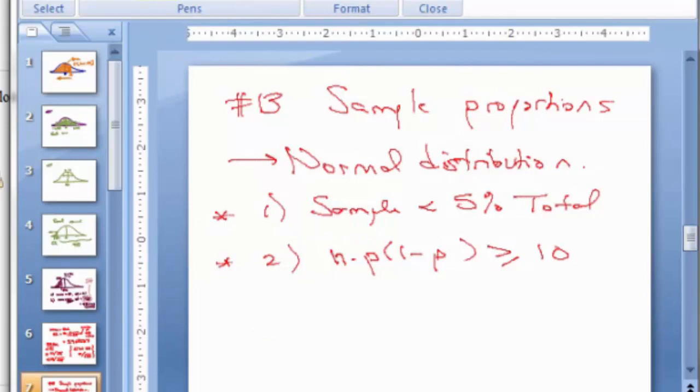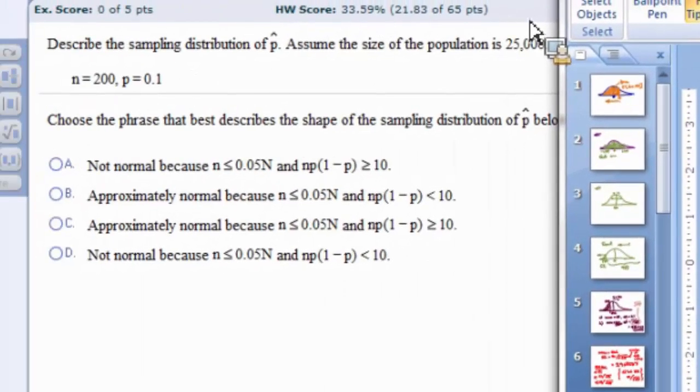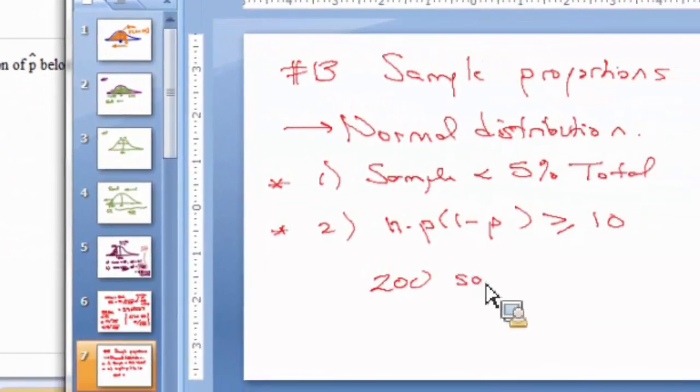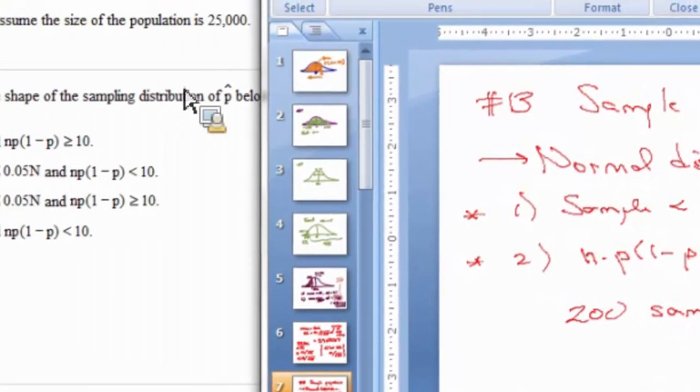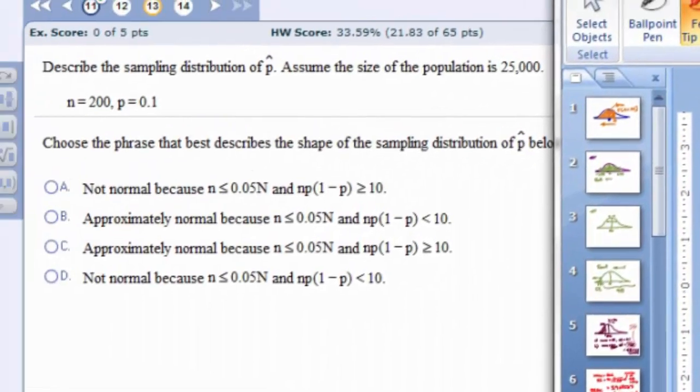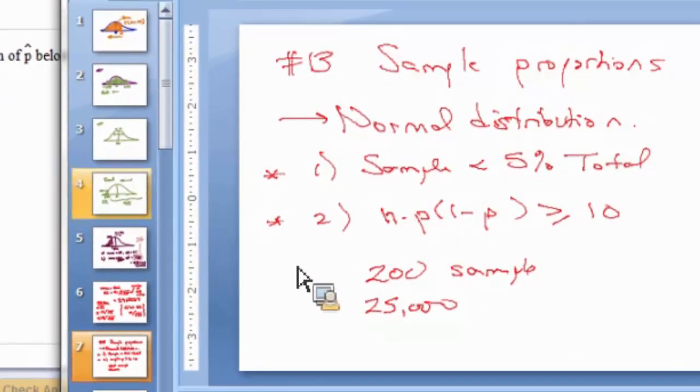Usually, the first one is not a concern. For example, if we're polling voters, our sample has to be less than 5% of the total population in the U.S. So with 300-some million people, there's no way we're going to get anywhere close. In this case, we have 200 in our sample. We have 25,000 in total. So that's capital N.